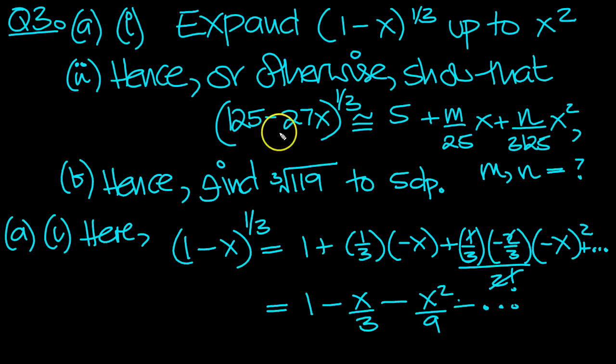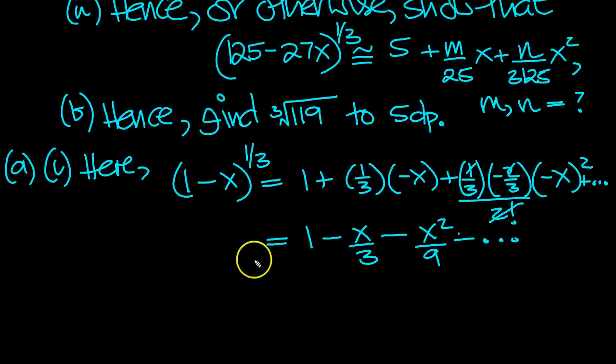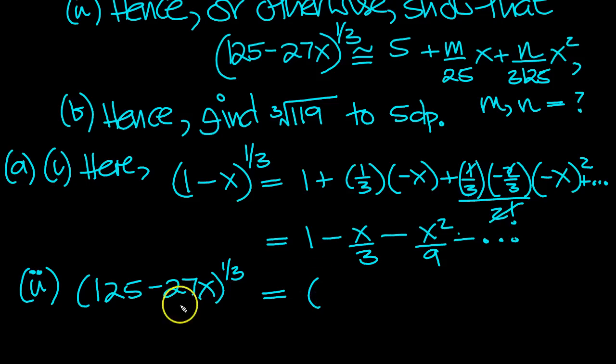Hence or otherwise, show that this is equal to this. 125 minus 27x to the 1/2. So let's have a look at this then. 125 minus 27x to the power 1/2. Okay, that's equal to, so let's take a 125 outside of a bracket here, so that we've got a 1 in place where we want it to be. We'll need the 125 underneath here. And 27 over 125x.